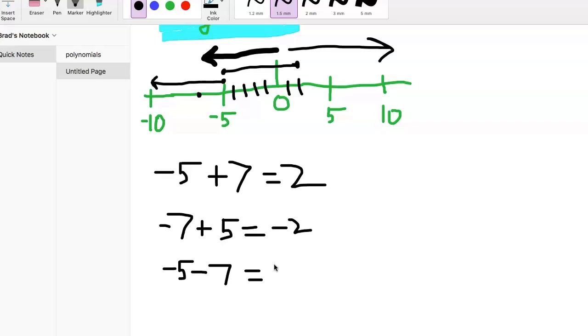You just count them off. 5 plus 7 is 12, and so then our final answer will be negative 12.